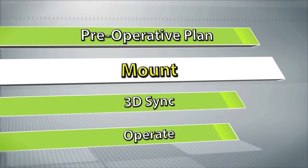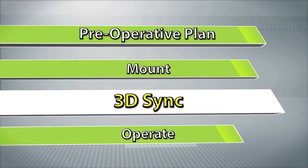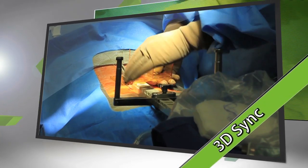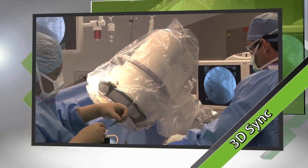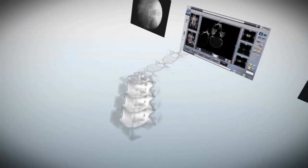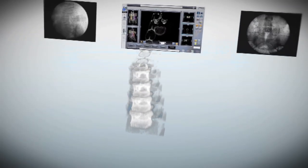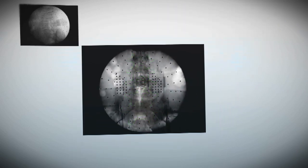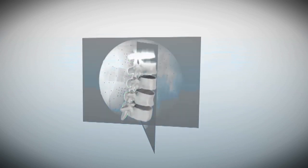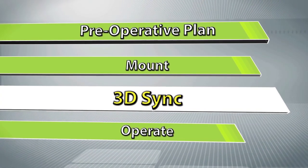Once the mounting platform is in place, matching of the intraoperative anatomy to the preoperative blueprint can be achieved. A 3D marker is attached to the mount, and two fluoroscopic images are taken — an AP and an oblique. Renaissance then matches these intraoperative images to their corresponding location on the preoperative CT, independently registering each vertebra regardless of changes in intervertebral space.